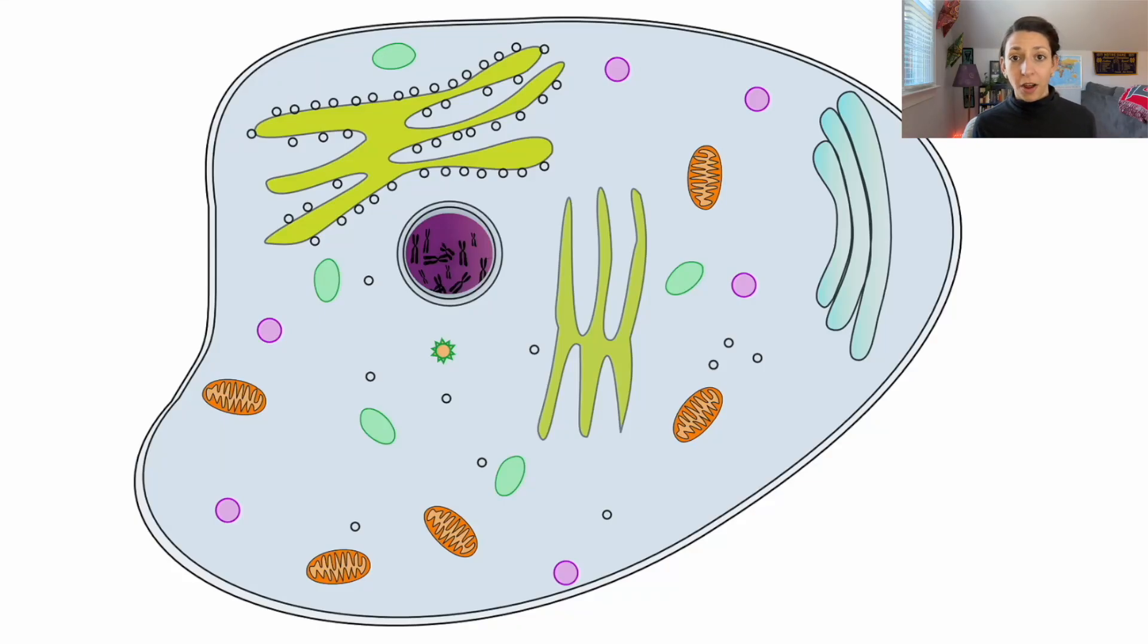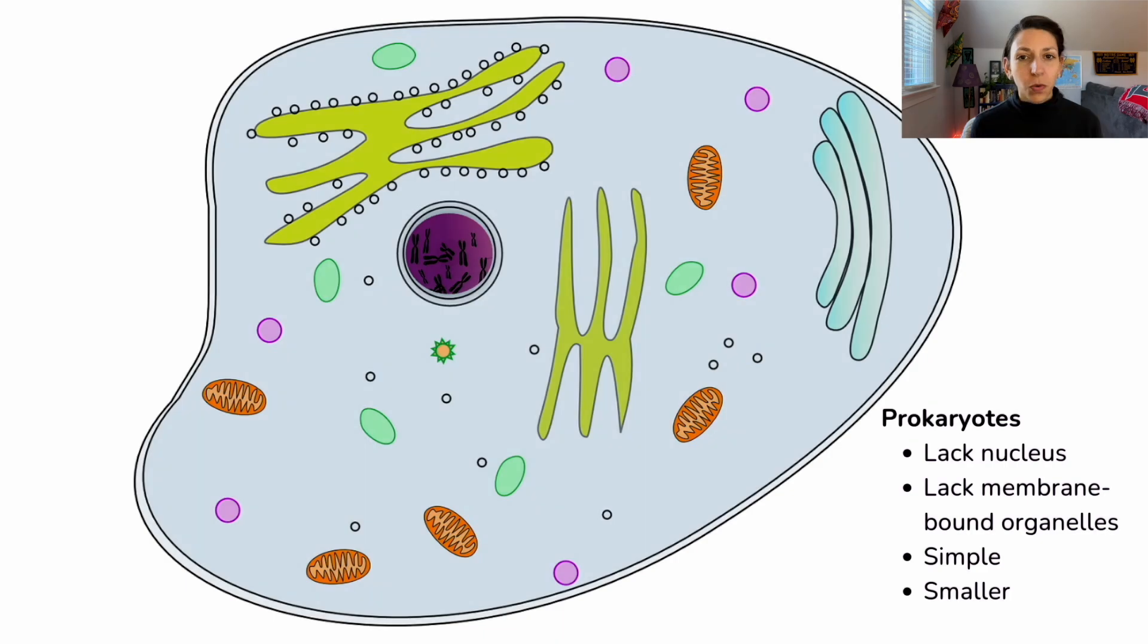Different cells will have different organelles depending on the functions that they serve. Prokaryotic organisms are going to have different organelles than eukaryotic organisms. And remember, prokaryotes are organisms that lack a nucleus and membrane-bound organelles, so they're going to be relatively simple compared to our eukaryotic organisms. They're going to be pretty small, and in general, they will have fewer components.